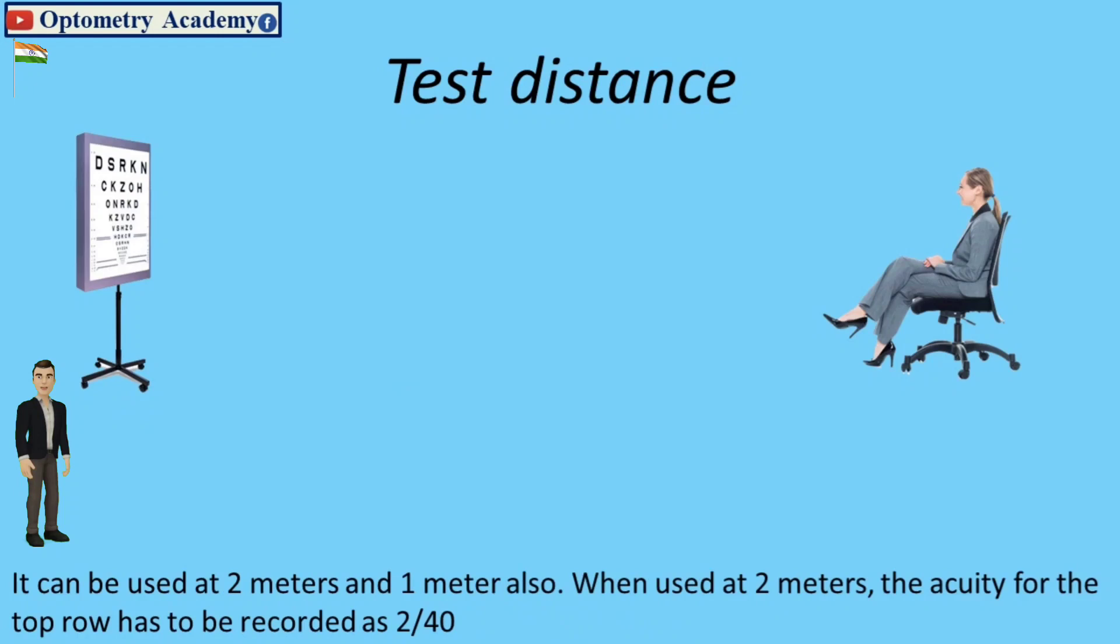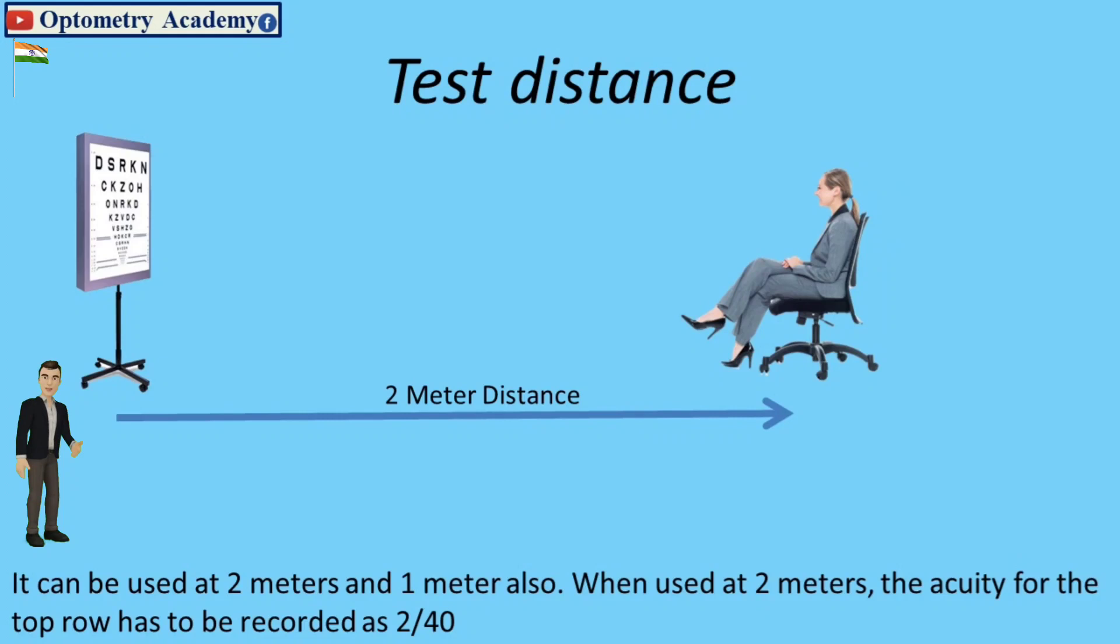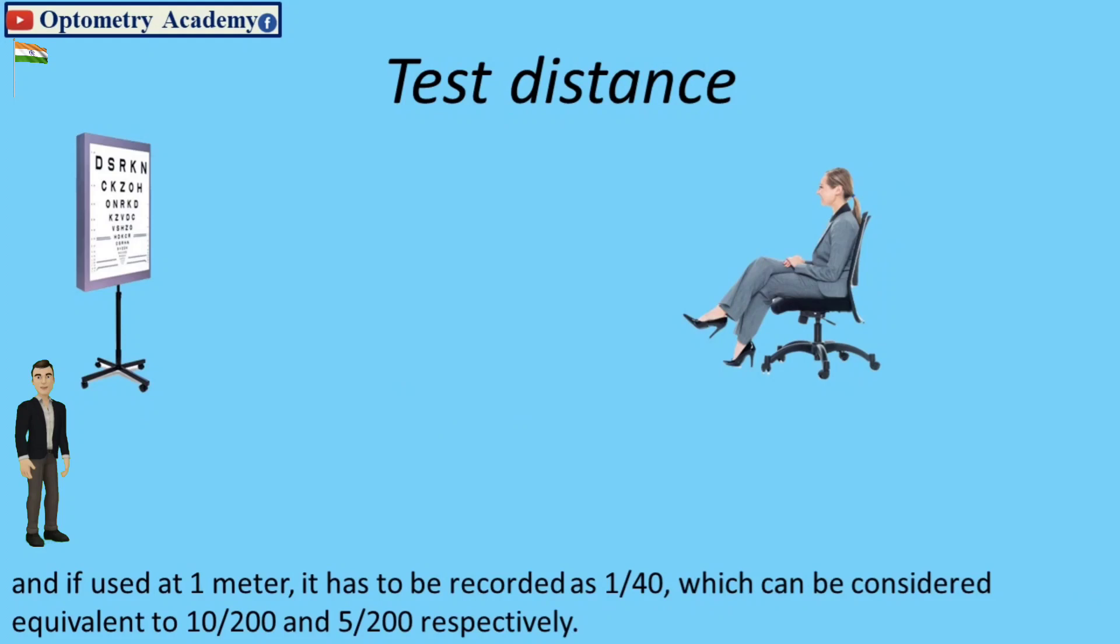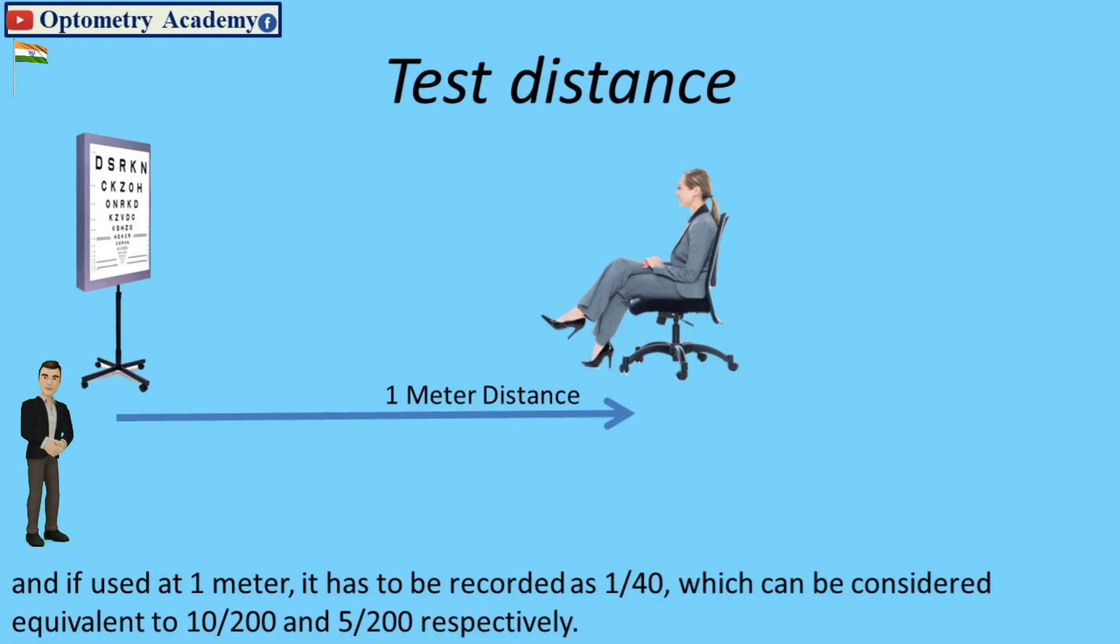It can be used at 2 meters and 1 meter also. When used at 2 meters, the acuity for the top row has to be recorded as 2 x 40. And if used at 1 meter, it has to be recorded as 1 x 40 which can be considered equivalent to 10 x 200 and 5 x 200 respectively.